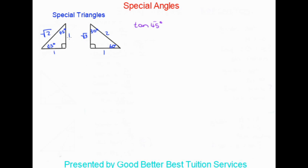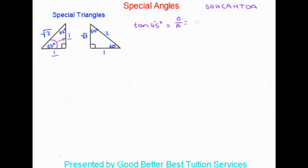You can use either of the 45-degree angles and the answer will come out the same. Using the bottom 45 degrees, we think about the tan ratio, which uses the opposite and adjacent sides. Opposite to this angle is one and adjacent is one, so tan 45 equals opposite over adjacent — one over one — which equals one.